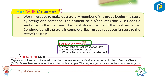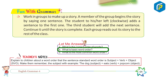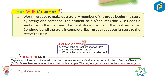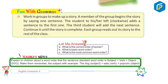Let me answer: A) What is the correct order of words? B) What is basic word order? C) What is the most common word order? Teacher's note: Explain to children that the standard word order is Subject + Verb + Object (SVO). Help them remember the subject with an example: 'The dog' (subject) + 'eats' (verb) + 'popcorn' (object).